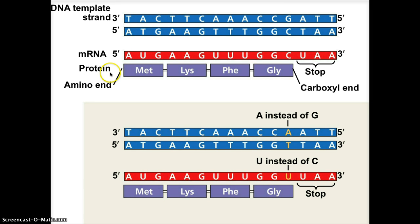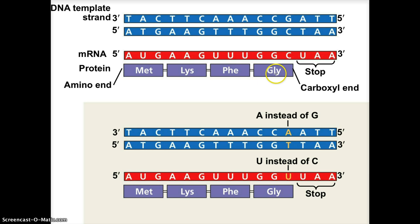Translation is when the codons of mRNA are read using the genetic code to get a string of amino acids — a protein. If you look at the genetic code, the first codon here, AUG, codes for MET or methionine. The second codon, AAG, codes for LYS or lysine. UUU codes for PHE or phenylalanine. And GGC codes for GLY or glycine, and we have a stop codon on the end. A real protein would be much longer than four amino acids, but this is just for learning purposes. This is our normal string of amino acids after gene expression of this strand of DNA.